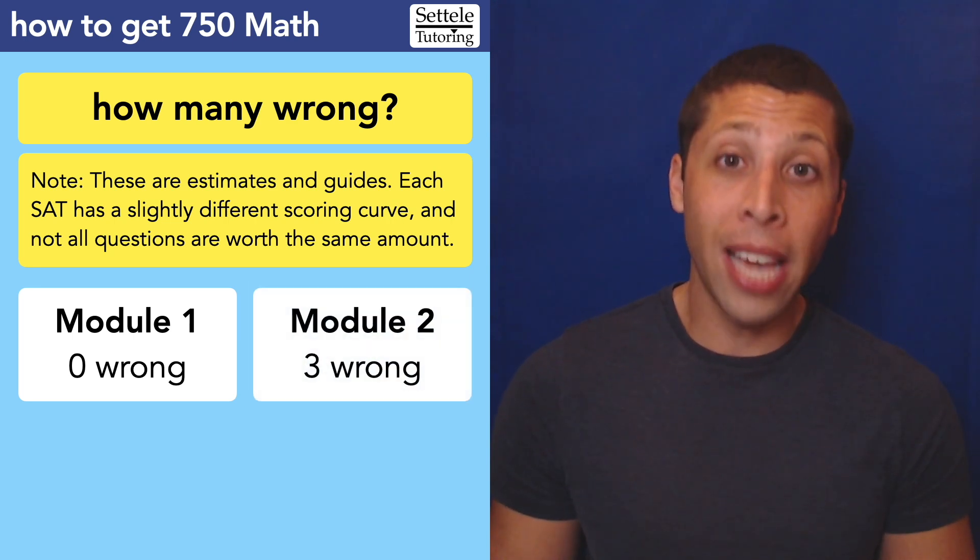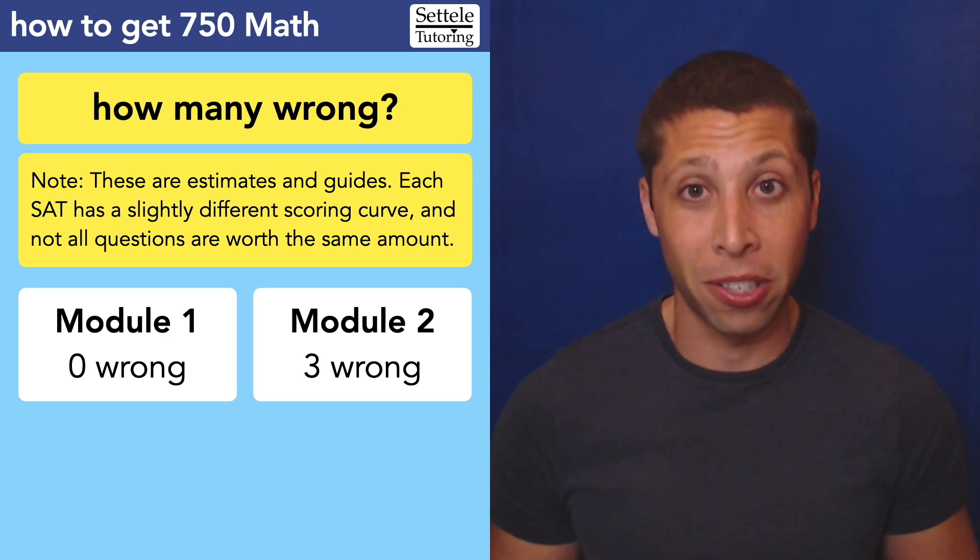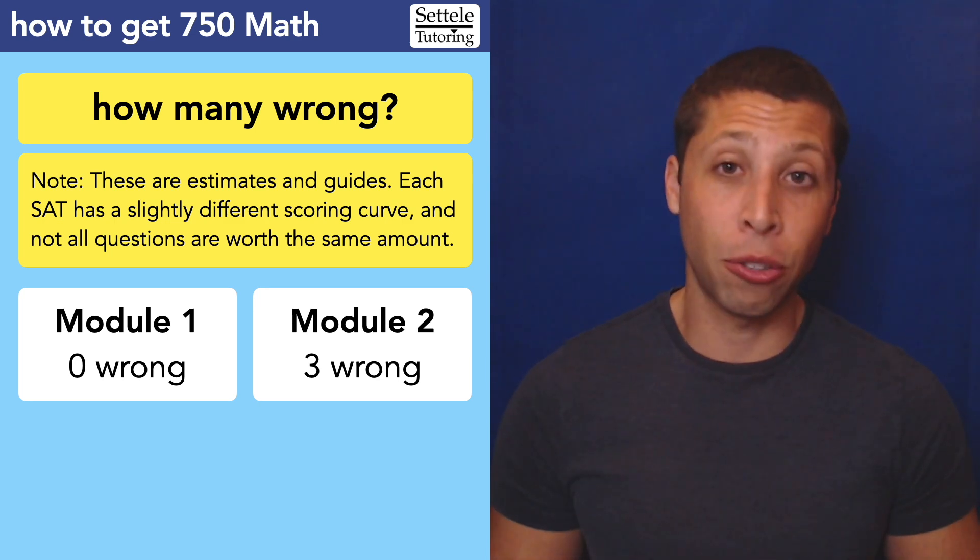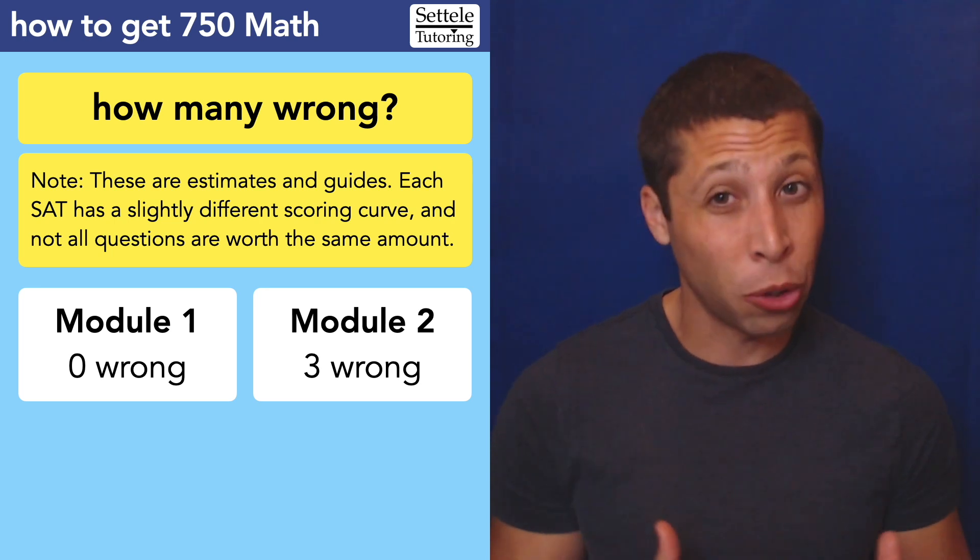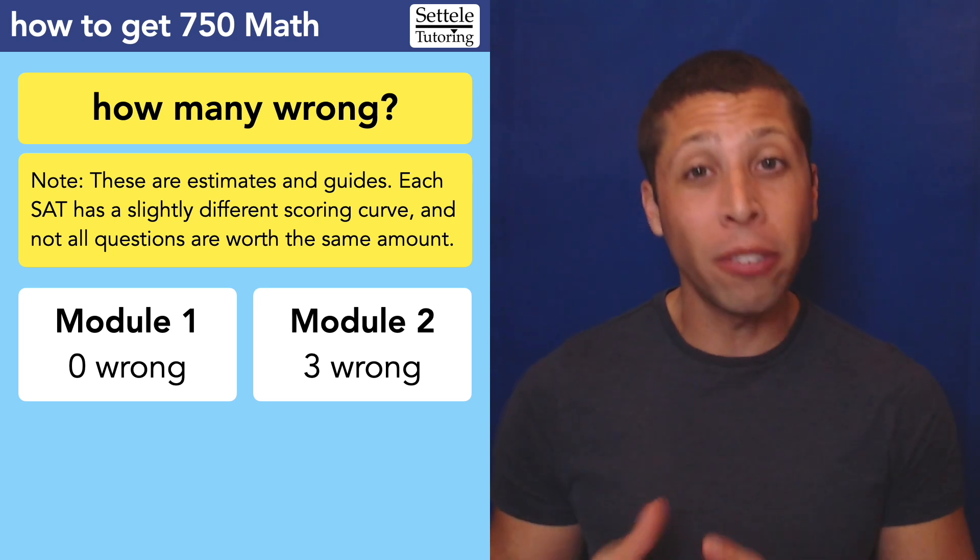Then in the hard module, yes, it will be more dense. There will be more hard questions. And so you might need to make choices, but you can get up to three questions wrong and probably still get a 750. As you can tell from the note there, this is something that is not set in stone. So it varies per test. It matters which questions you get right and wrong, but generally speaking, you are allowed to make a few mistakes and still get a 750, which is an amazing score.